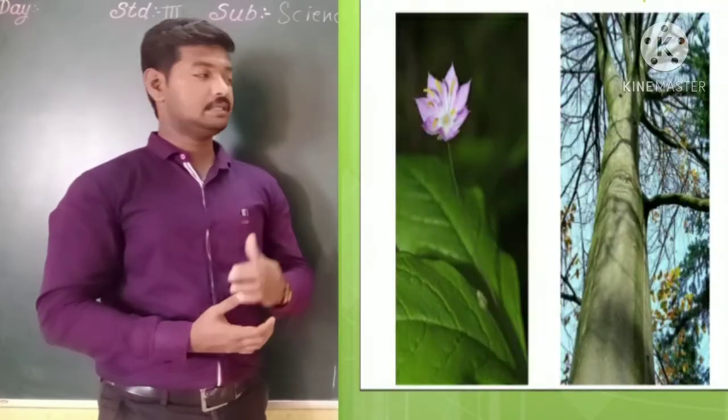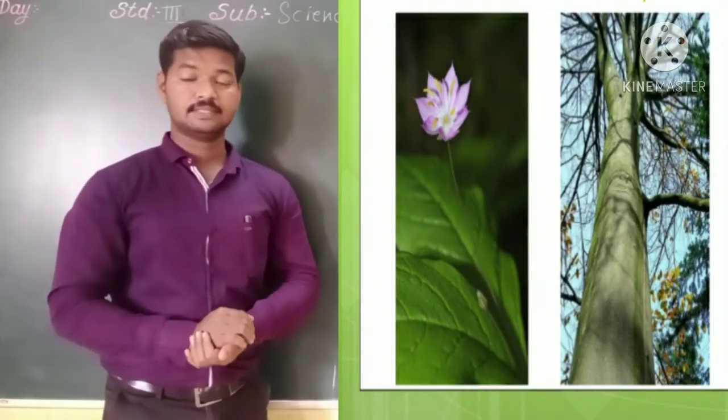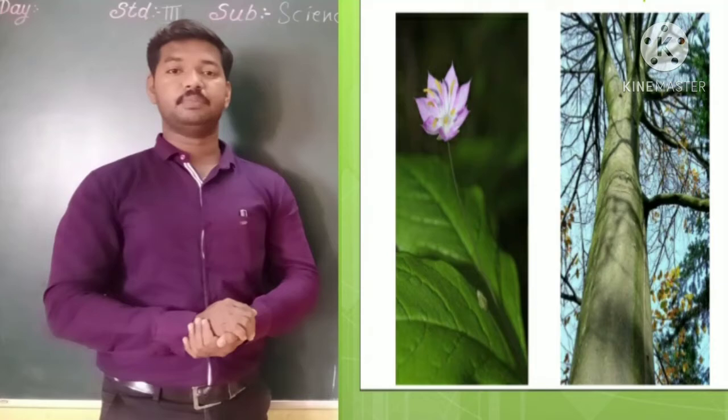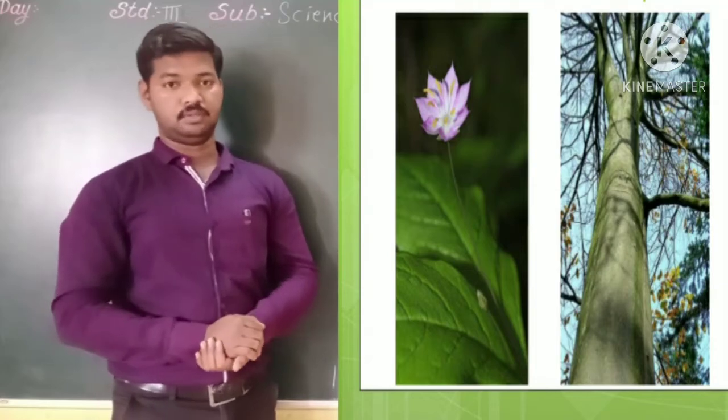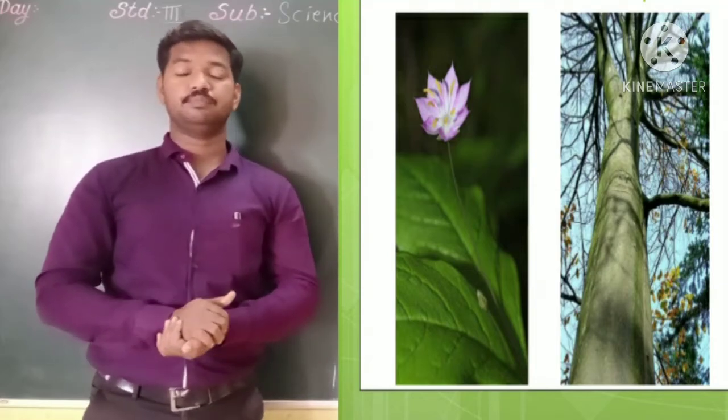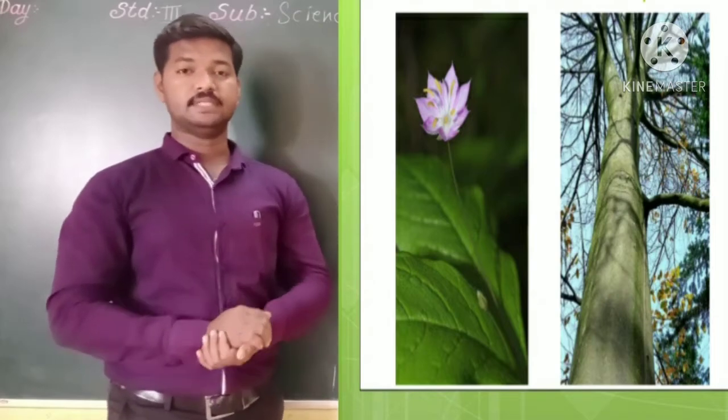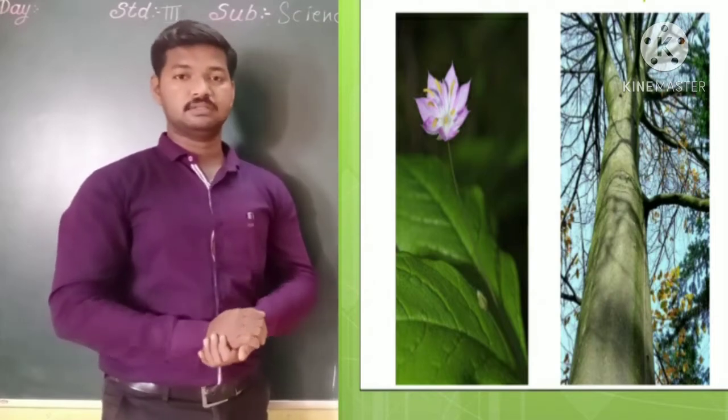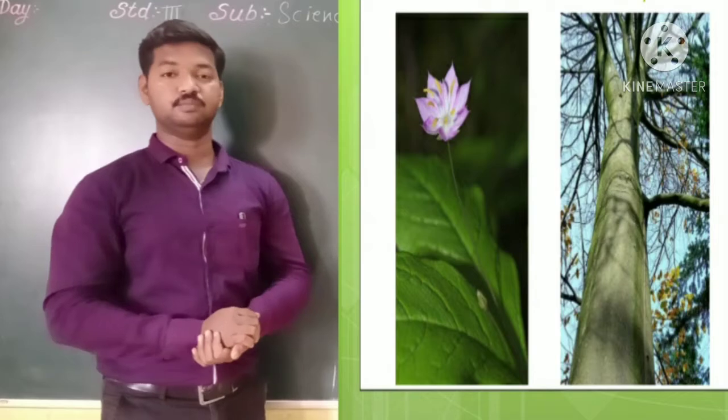Now first we will talk about stem. Stem is the main part of shoot. Stem bears branches, leaves, flowers, fruits and buds.